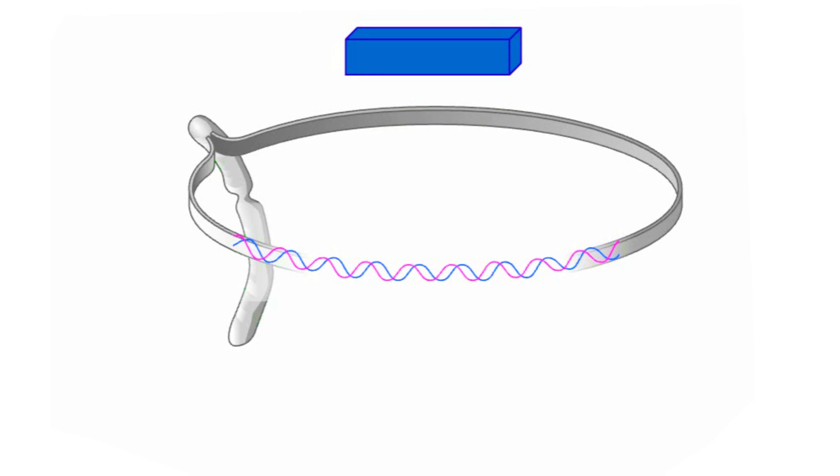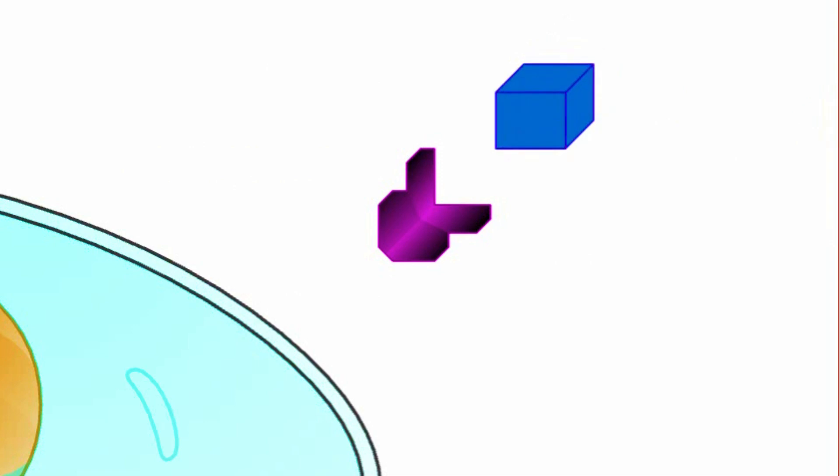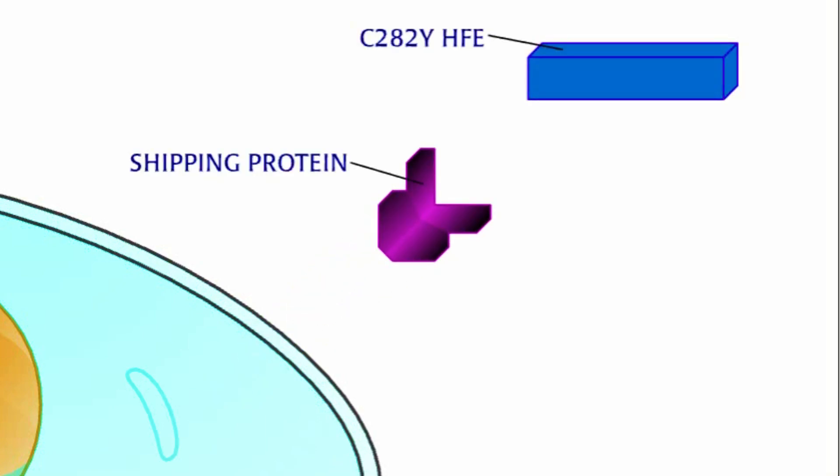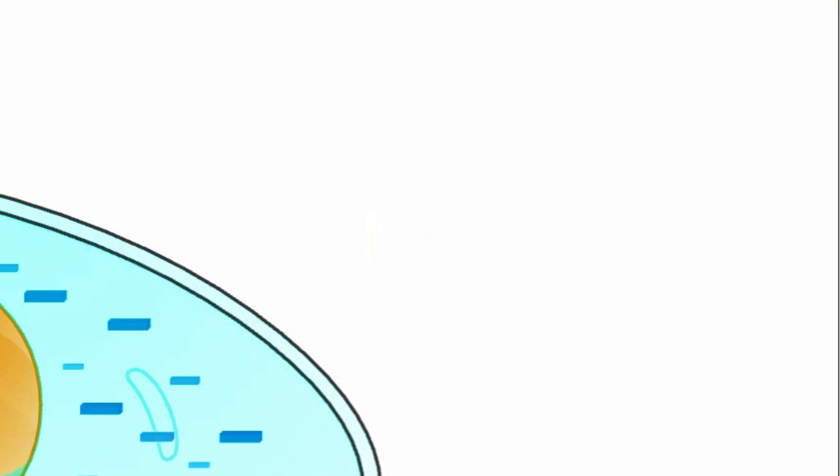The mutant protein cannot fold into its proper shape. Normally, the HFE protein binds to a shipping protein that carries HFE to its place in the cell membrane. The C282Y HFE protein is a different shape. The shipping protein can no longer bind to the mutated HFE and thus no HFE is present in the cell membrane. The C282Y HFE stays in the cell interior and is eventually degraded.